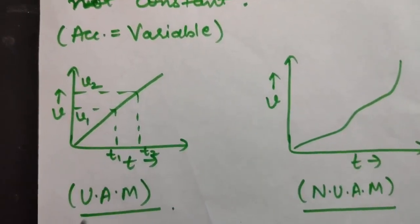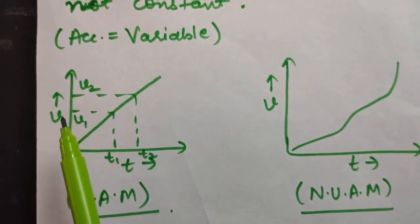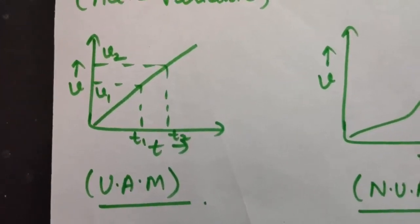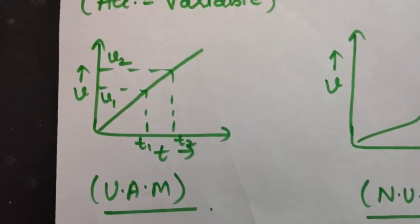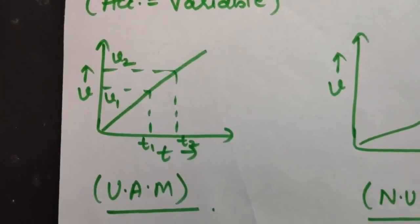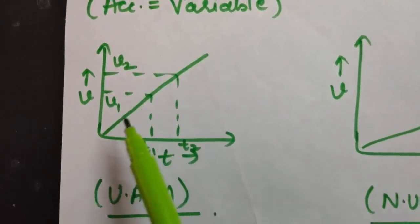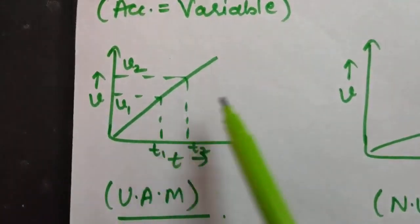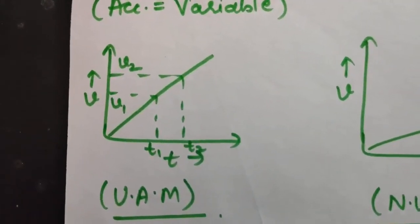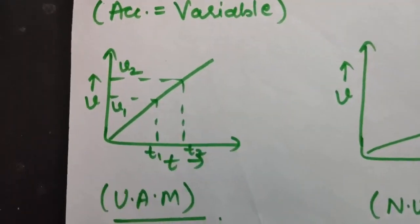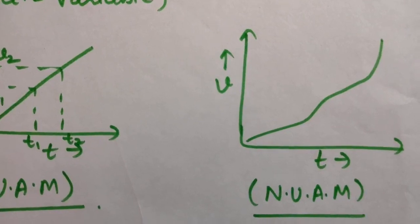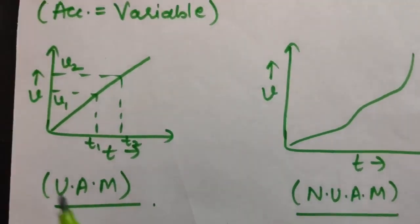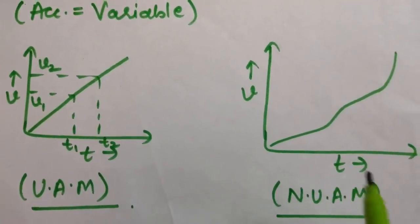For the velocity-time graph of uniformly accelerated motion: since acceleration is constant and slope of the velocity-time graph gives acceleration, a constant slope means it will be a straight line. For non-uniformly accelerated motion, since acceleration is not constant, the graph can have any variable shape.